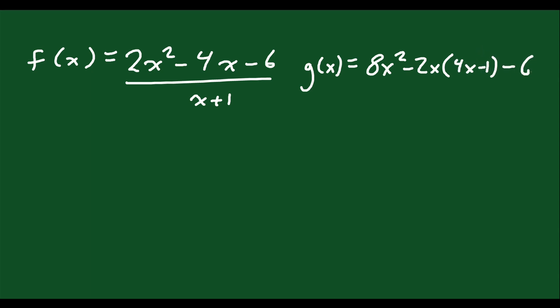Let's say we're given two functions. We're given f(x) equals 2x squared minus 4x minus 6 divided by x plus 1, and we're given g(x) equals 8x squared minus 2x times 4x minus 1 minus 6. And let's say we're asked to determine if the following expressions are equivalent.